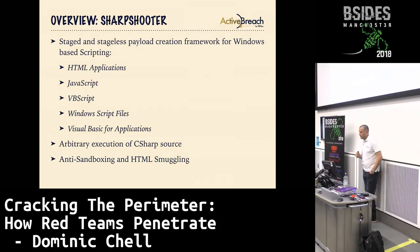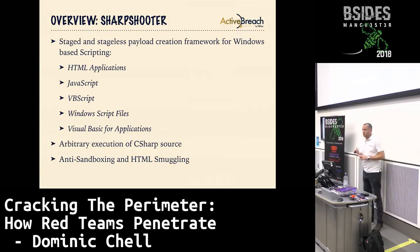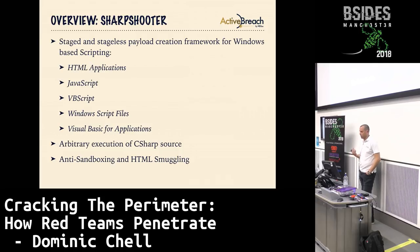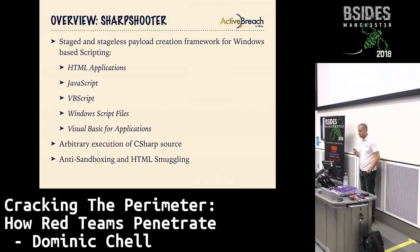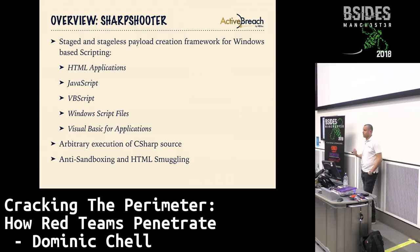So what does the tool do? It basically allows you to create staged and stageless payloads for the majority of Windows-based scripting formats — HTML applications, JavaScript files, VBScript files, Windows script files, and VBA. Staged means you get a small bit of code, the stager, which runs on the endpoint and retrieves the main payload — in this case some C-sharp source code. Stageless means the full code is embedded inside the script file, and when it executes it does everything needed, like running shellcode or running your implant.